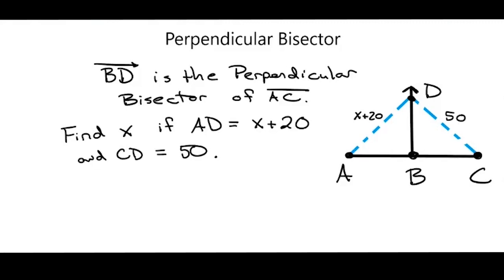I've learned that AD is congruent to CD because this is a perpendicular bisector and point D is the same distance to A as it is to point C. So I can say that x plus 20 equals 50.